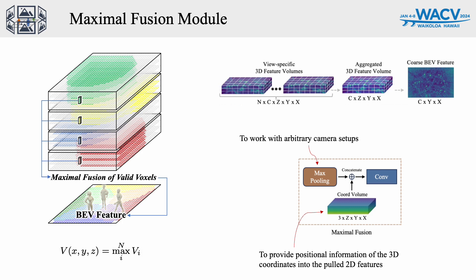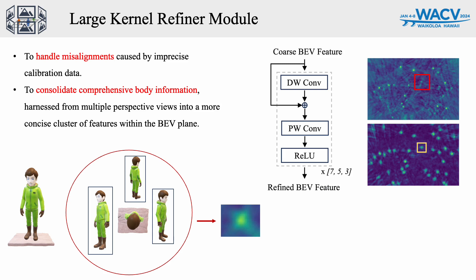These view-specific feature volumes are aggregated using the max pooling operation and concatenated with a coordinate volume to provide position information of the 3D coordinates into the pulled 2D features, creating a coarse bird's-eye-view feature map. We refine this with a novel large kernel refiner module, which uses a gradual refinement mechanism from large kernel sizes to small kernel sizes, to handle misalignments caused by imprecise calibration data and to consolidate comprehensive body information harnessed from multiple perspective views into a more concise cluster of features.